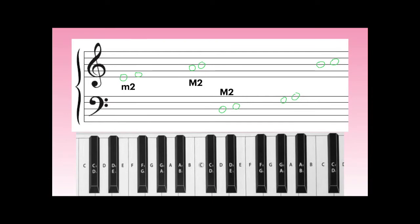Then we see a G to an A, which is also two half-steps apart, so that's a major second. And finally, B to C — by now you should recognize these keys are neighbors on our keyboard, so this is a minor second.